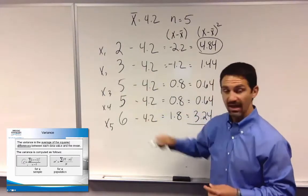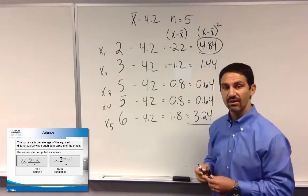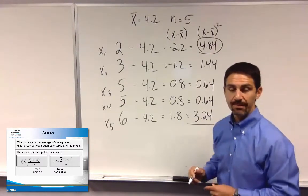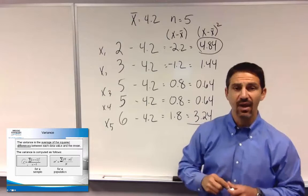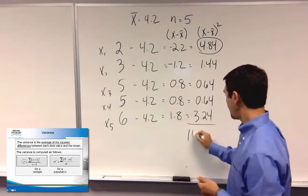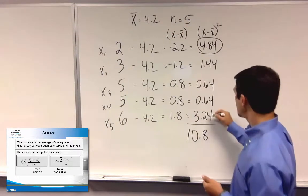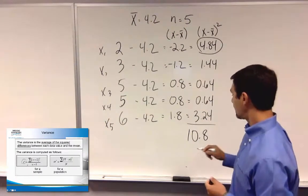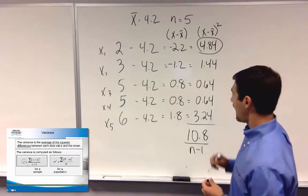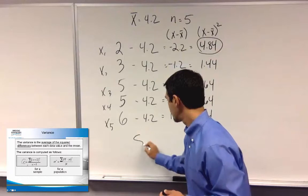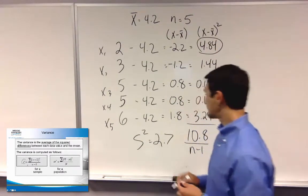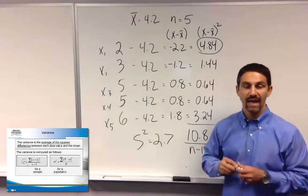And you do that 5 times because you have 5 in your sample. That would give you a total here. The sum that you have on your calculation would then be 10.8 when you add up these values. Divide that by n minus 1, and you should have a variance of 2.7.